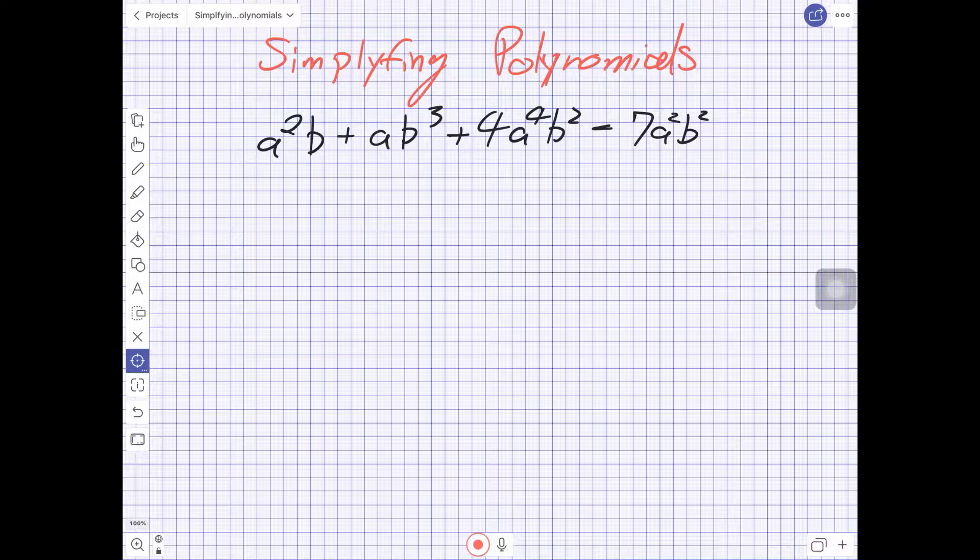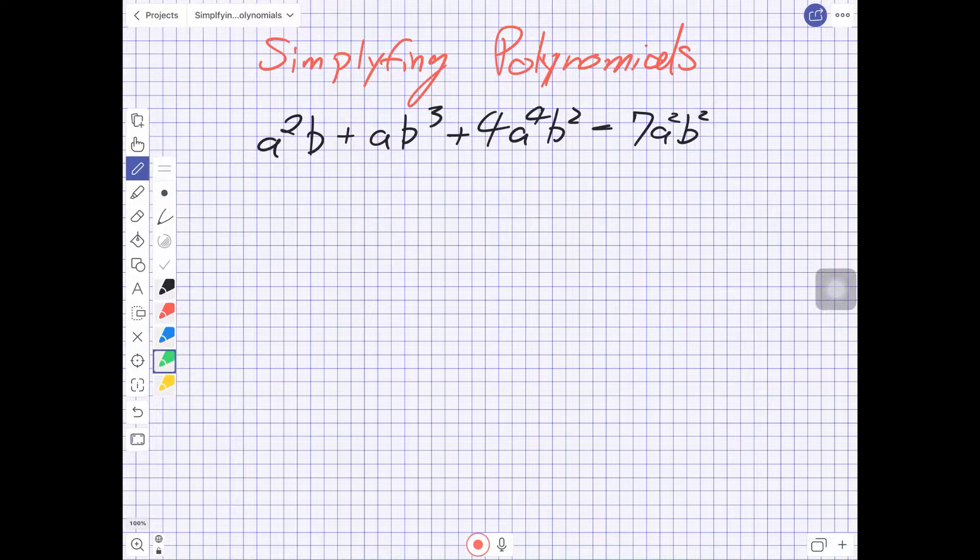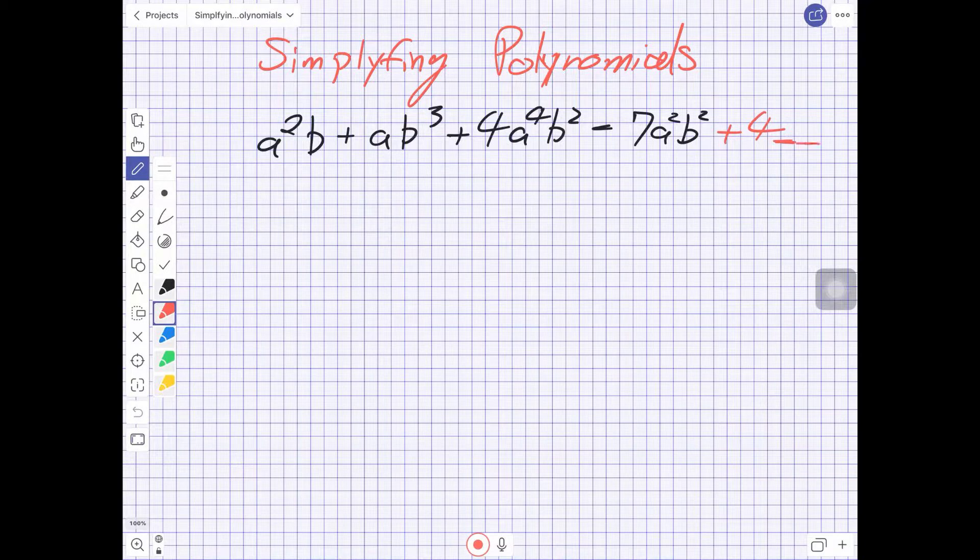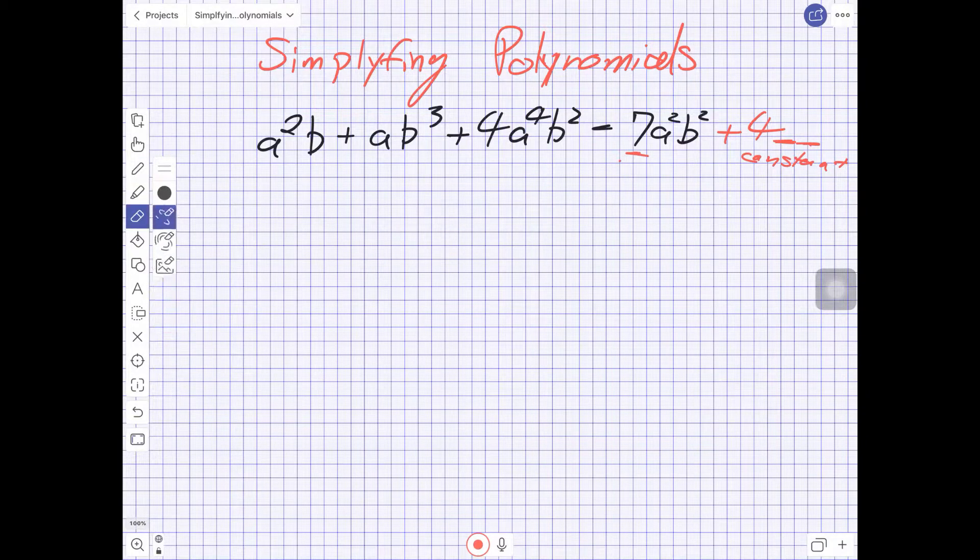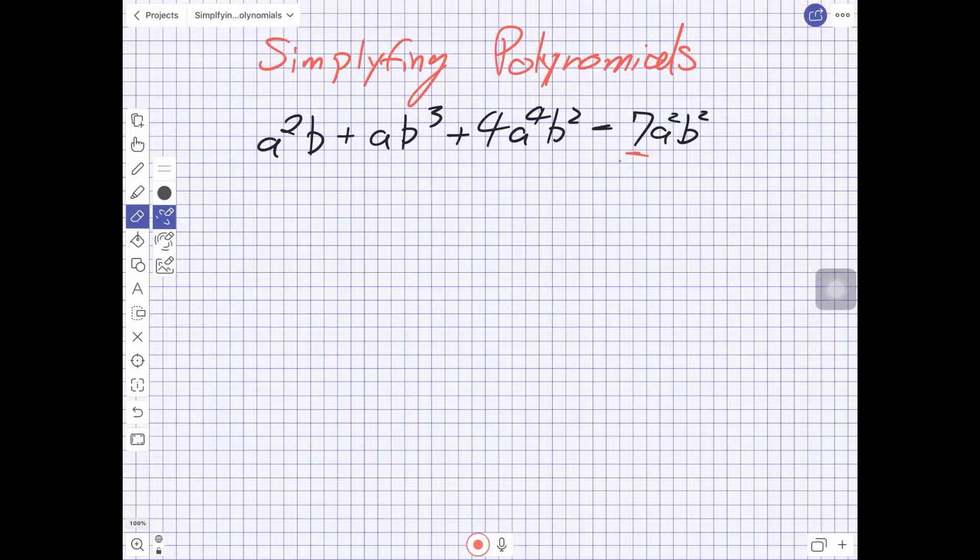But I'm going to draw one at the end here. If I was to say plus four, you'll notice there's no variables attached to it. That's called a constant. Otherwise these are coefficients. Not too important for the process of solving things, but it's good to know whenever they use that math language.